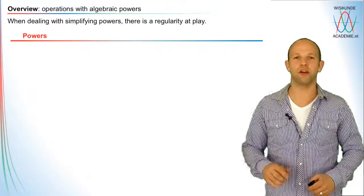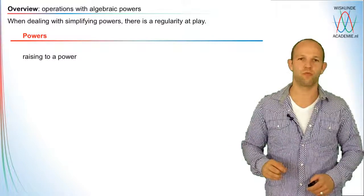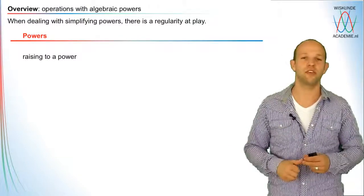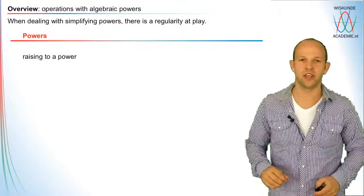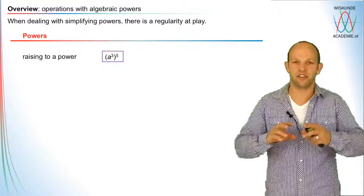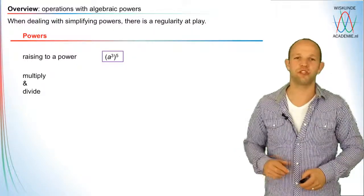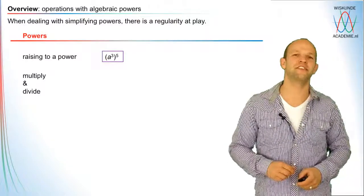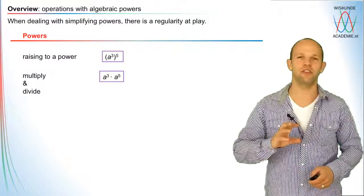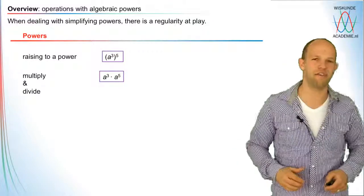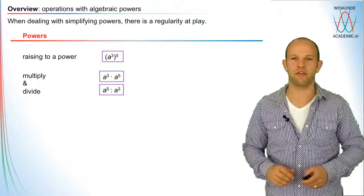When looking at the powers that are possible, we can have a few different options. First of all, raising a power to a power — for example, a to the power 3, and then the fifth power of that. The second option is multiplying and dividing — for example, a to the power 3 times a to the power 5, or a to the power 5 divided by a to the power 3.